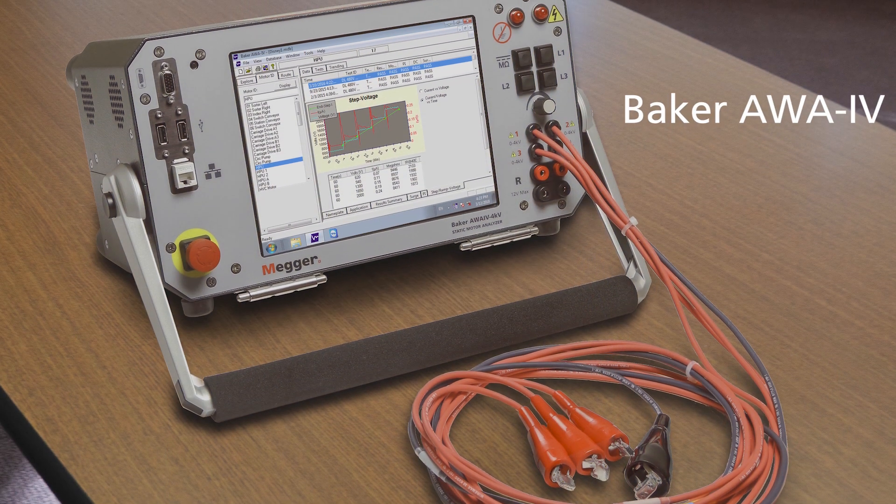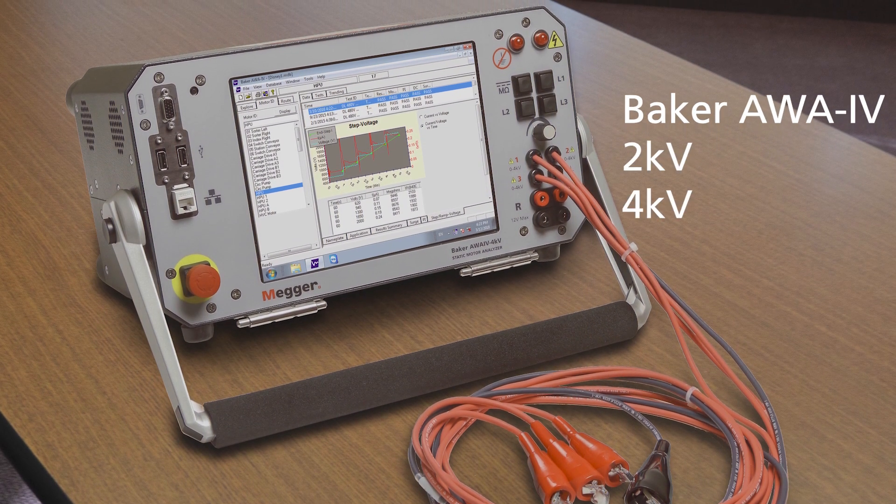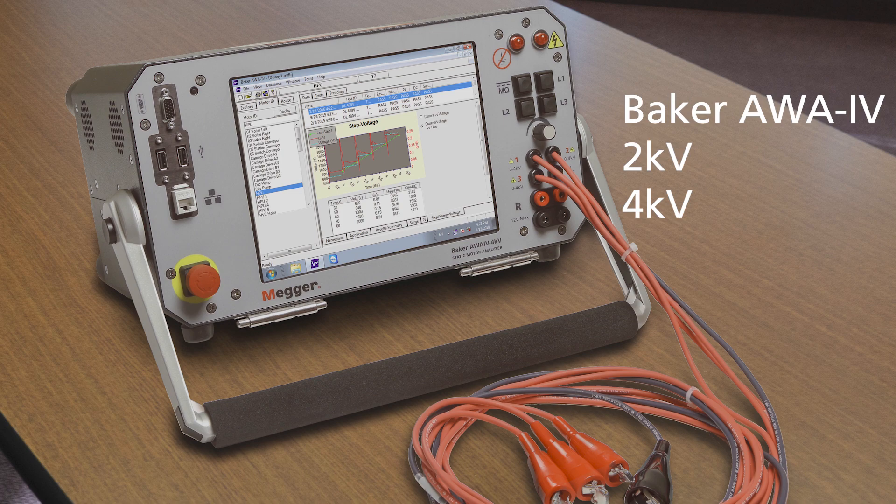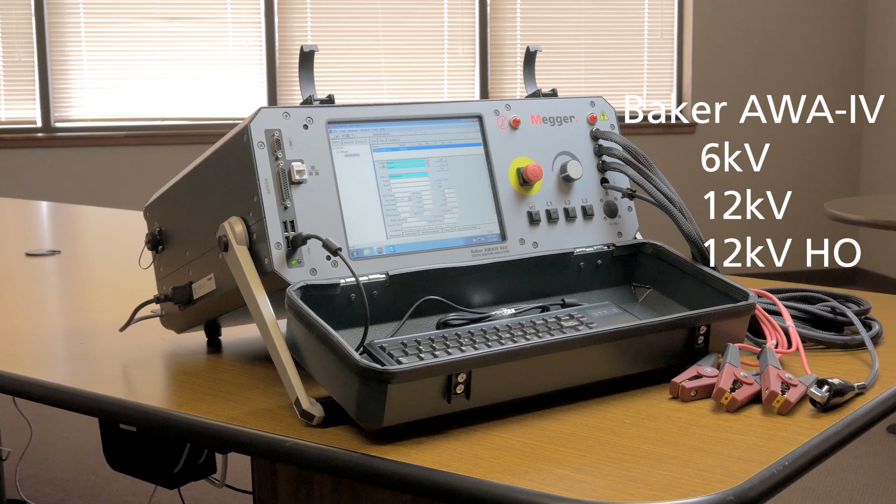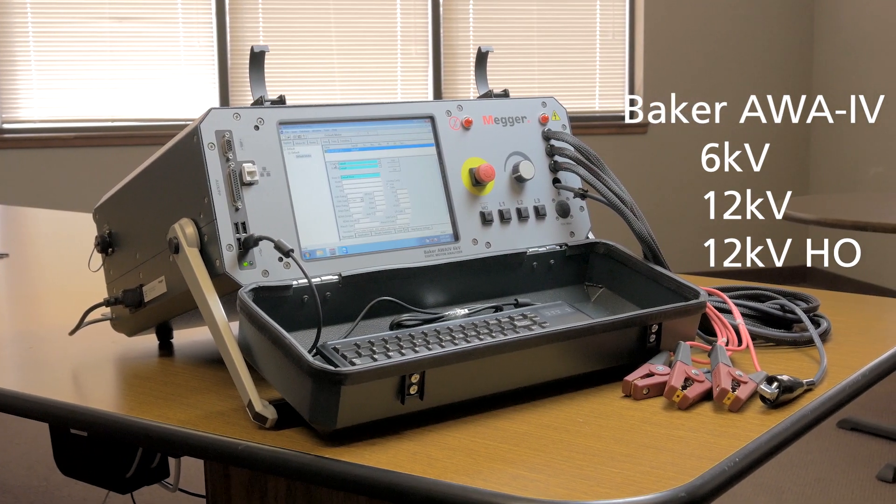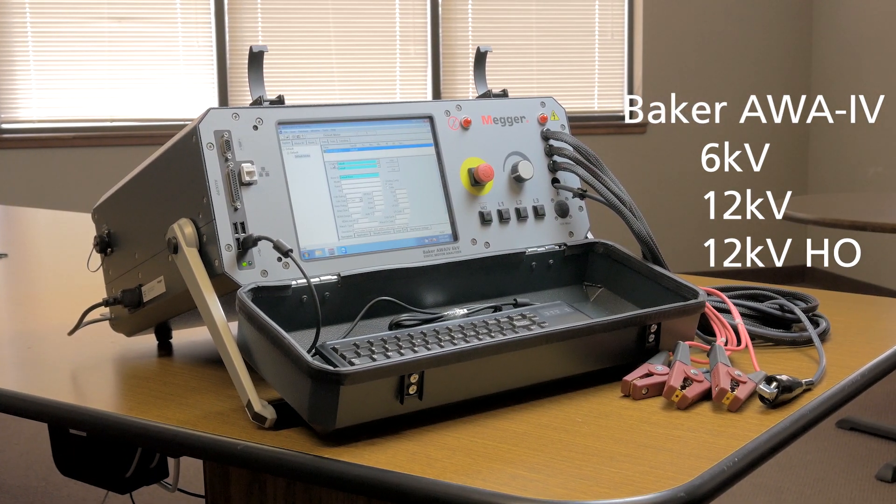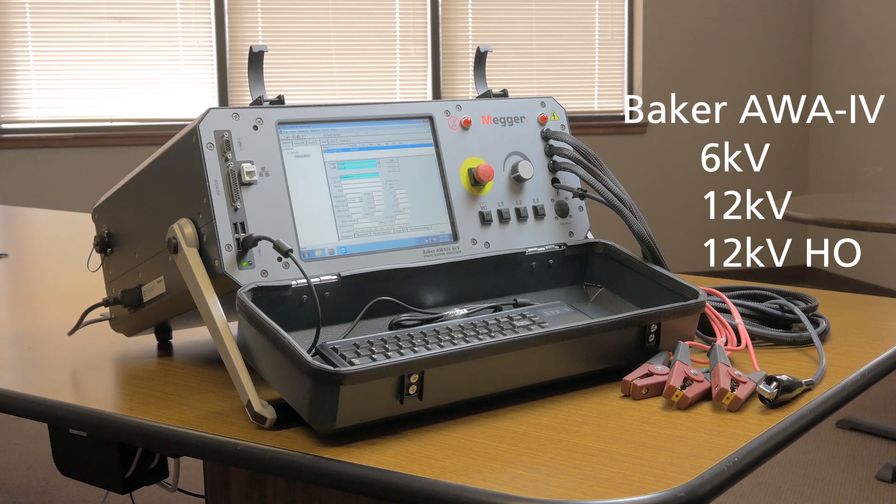The AWA is available in two package sizes with 2kV and 4kV analyzers in the small package and 6kV, 12kV and 12kV high output in the large package. These automated analyzers are ideal for predictive maintenance and quality control.